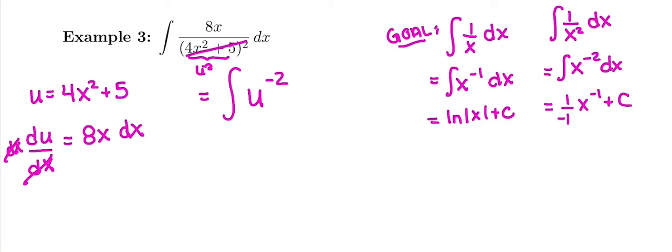Quotient rules are negative exponents. In order to be allowed to take the integral, I need a du in there, which means I need an 8x dx, which we have an 8x and a dx. So we are good to write du. Everything left over, we sub in, it's just called du. Now we're allowed to take the antiderivative.